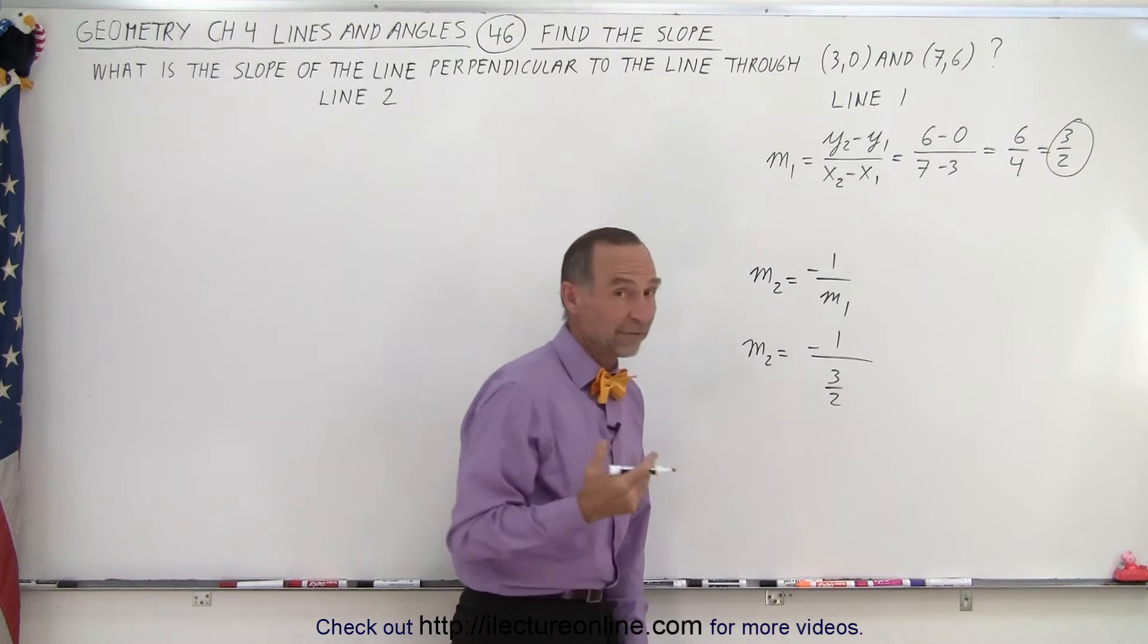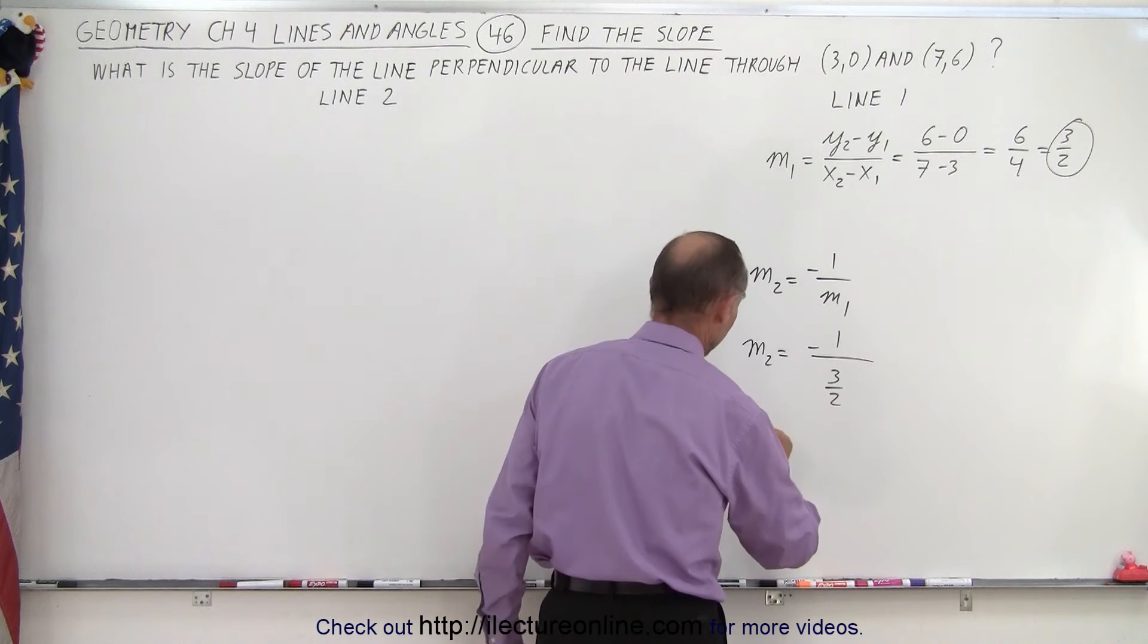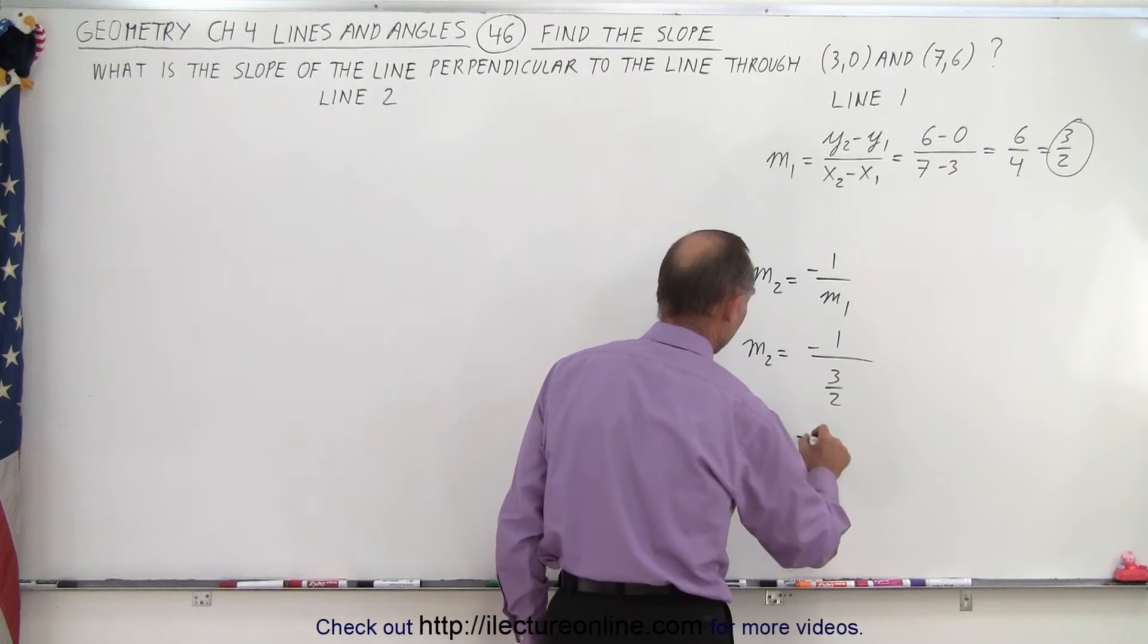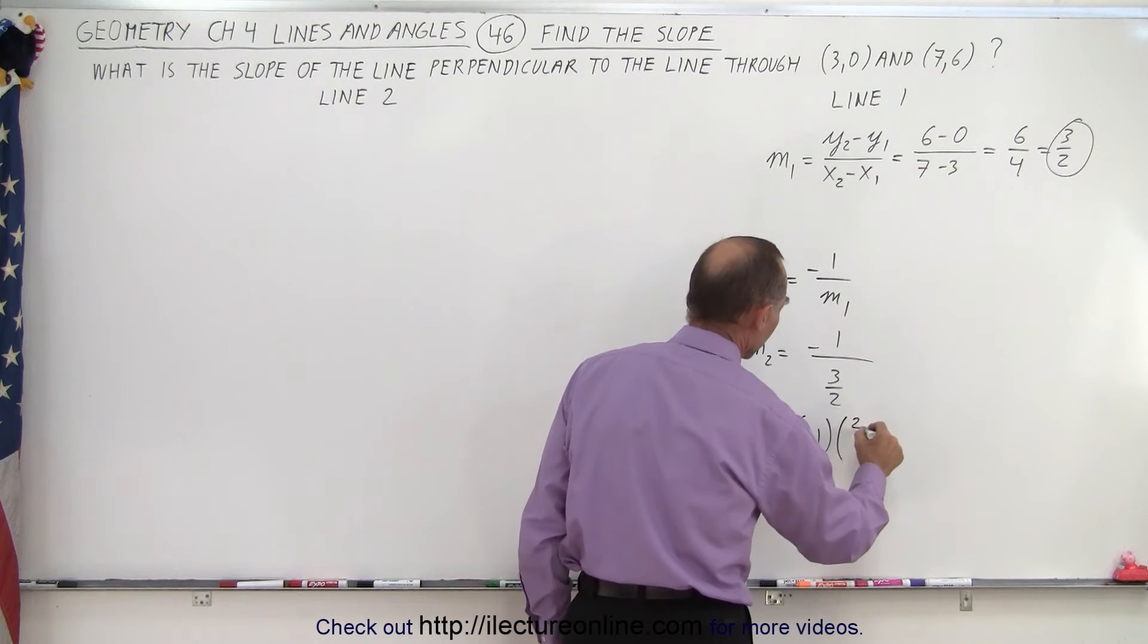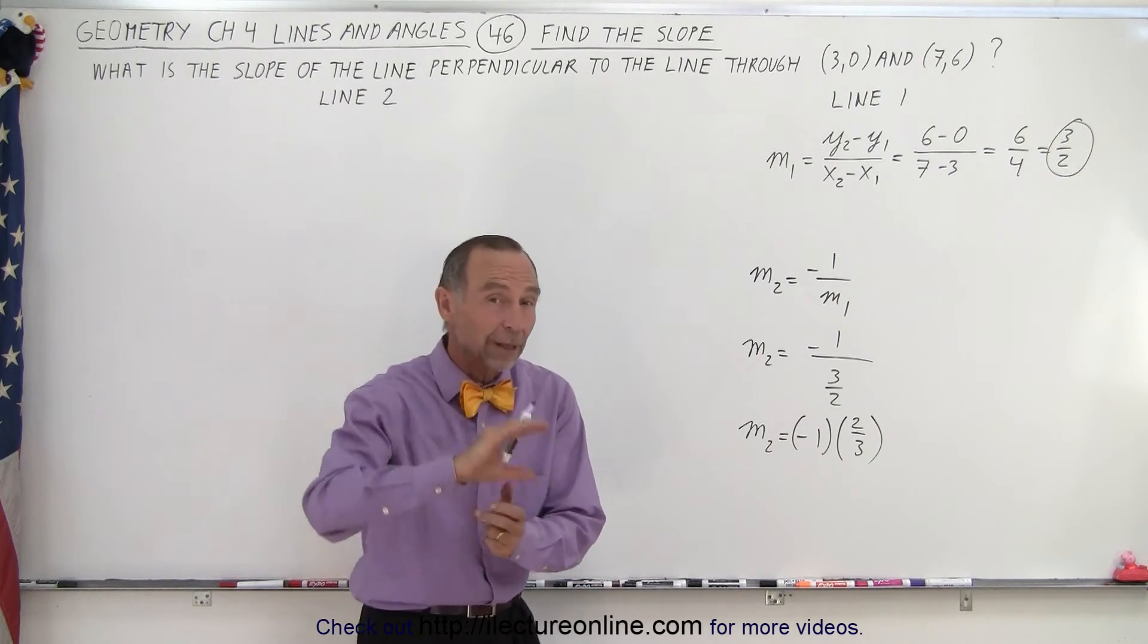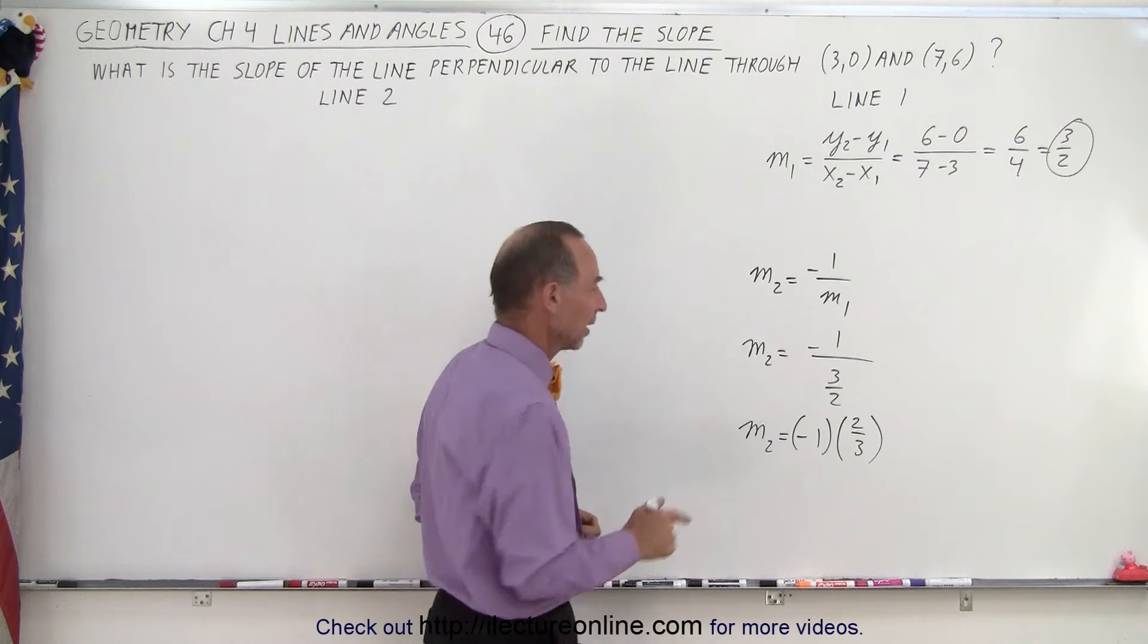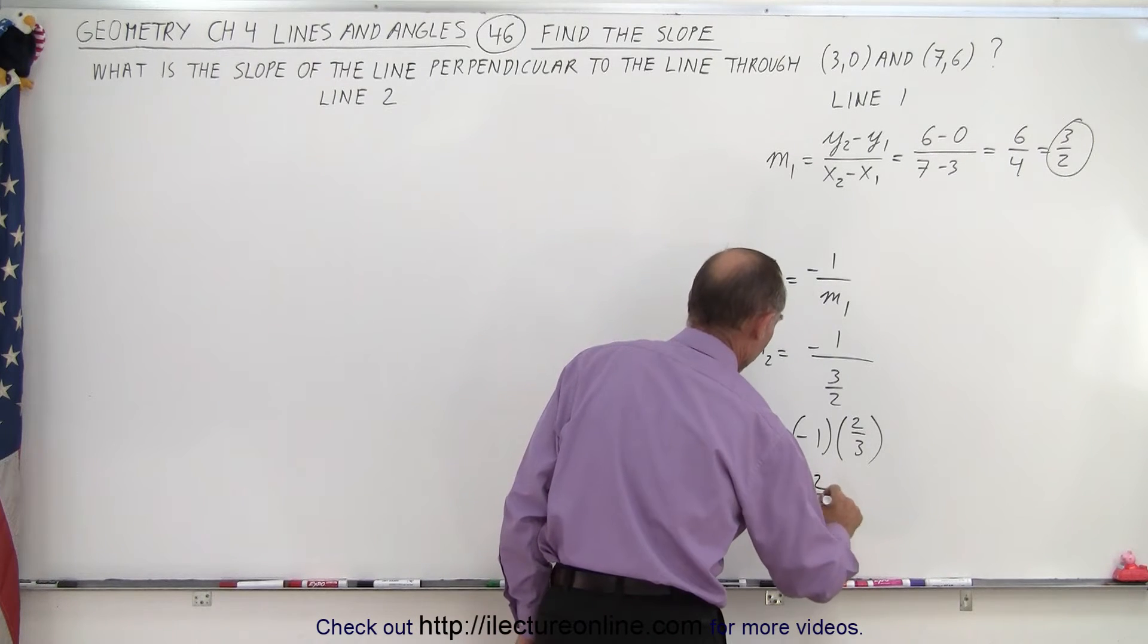Now dividing by a fraction is the same as multiplying by that fraction, by the inverse of the fraction I should say. So m2 is equal to negative 1 multiplied times the inverse of 2 over 3. So again, dividing by a fraction is the same as multiplying by its inverse. And so therefore we can say that m2 is equal to negative 2 over 3. And that's how we find the solution.